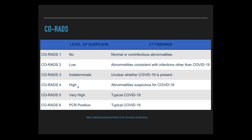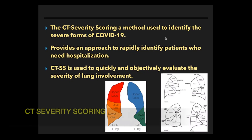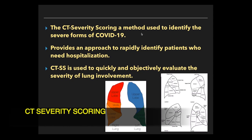CO-RADS 4 raises a high level of suspicion where abnormalities are suspicious for COVID-19. CO-RADS 5 raises a very high level of suspicion where typical COVID-19 features are present. CO-RADS 6 is an RT-PCR proven case of COVID-19.